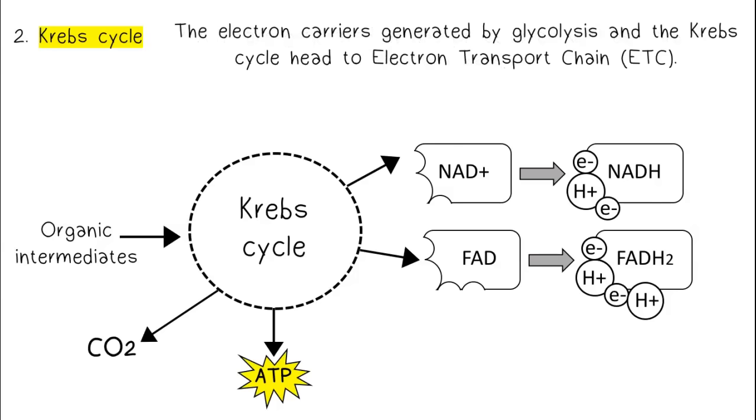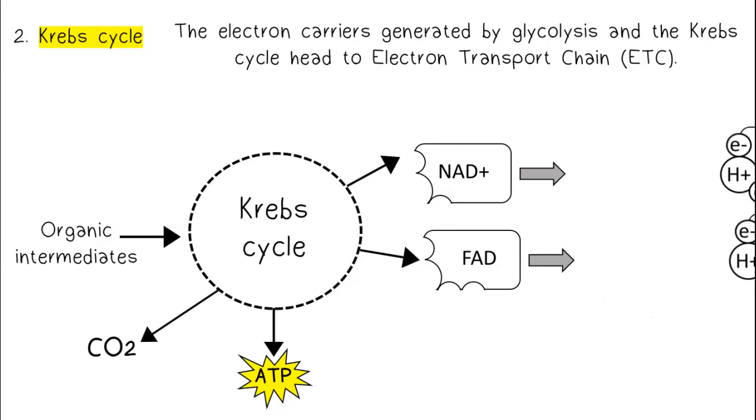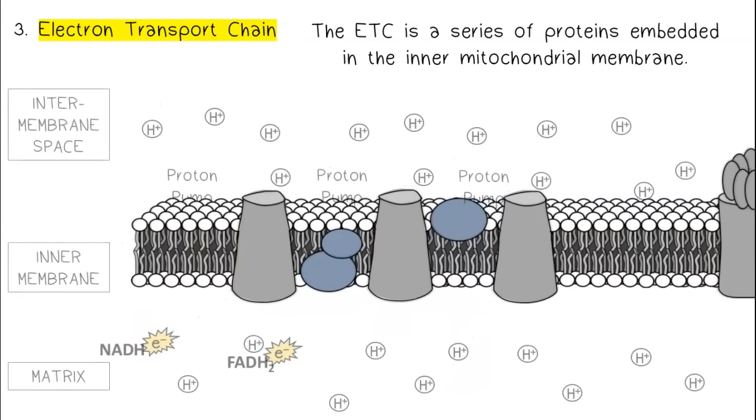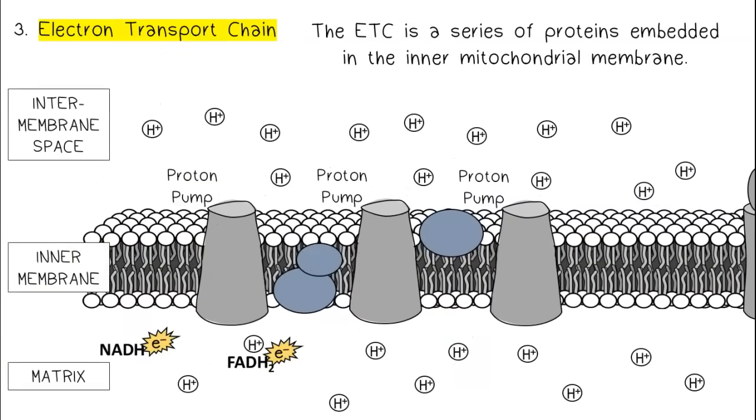The electron carriers generated by glycolysis and the Krebs cycle head to the electron transport chain. The ETC is a series of protein channels embedded in the inner mitochondrial membrane.